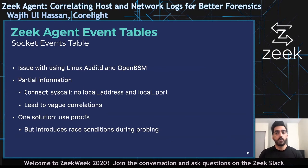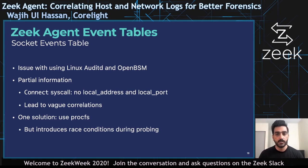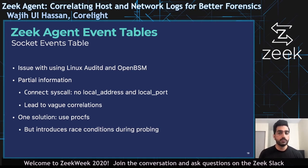However, there is one problem with the default auditing frameworks: these frameworks only record parameters to syscalls and asynchronously push them to user space, so we have partial information related to socket events. For example, for the connect syscall, we don't have local address and local port. Due to this partial information, we will have ambiguity when correlating host socket events with network flows inside Zeek. One solution is to use procfs to fetch the missing information. However, it could introduce race conditions while probing, so Zeek Agent currently does not use procfs.